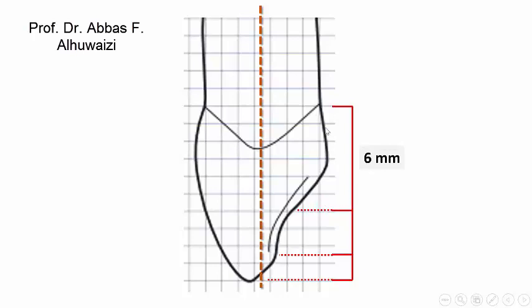The cingulum is about 6 mm in height. Then there is a concavity which is about 2.5 mm in height, ending at the beginning of the incisal ridge, which is about 1.5 mm.